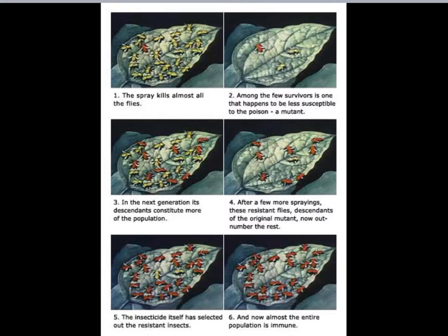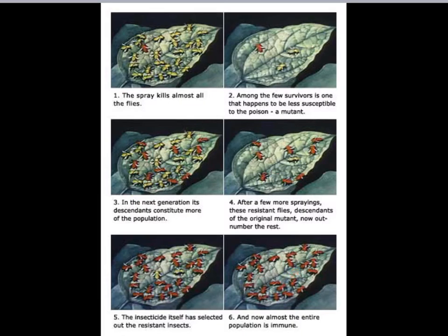This example deals with insecticides. Imagine all these insects are color-coded. An insecticide is sprayed on a plant and kills off most of them, but some survivors remain — those less susceptible due to genetic variation. They survive and reproduce. In the next generation, there are many more resistant insects. When the insecticide is sprayed again, almost all susceptible ones are killed. Eventually the population is made up entirely of insecticide-resistant insects. That's evolution through natural selection.